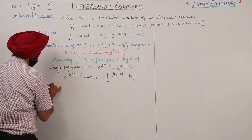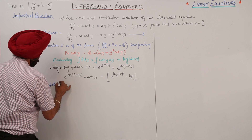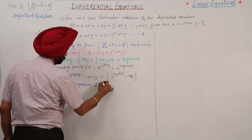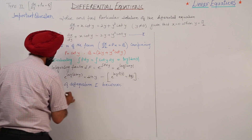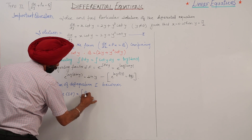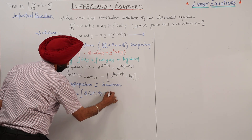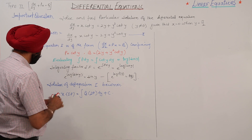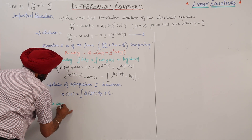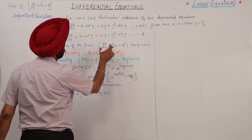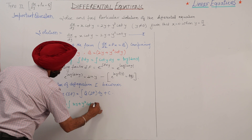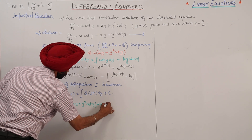The solution of differential equation 1 becomes: x times IF equals the integration of Q times IF dy plus C. So it becomes x sin y equals the integration of (2y plus y squared cot y) times sin y dy.